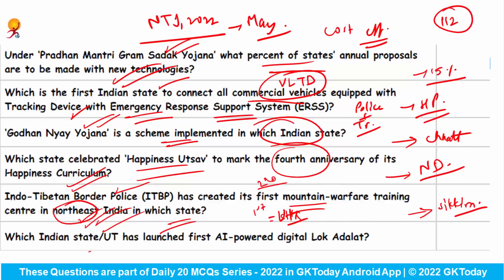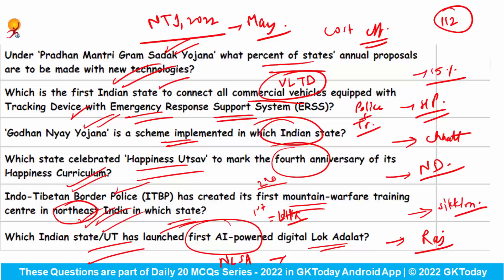Which Indian state or union territory has launched the first AI-powered digital person? It was launched in Rajasthan by our National Legal Services Authority Chairman, Mr. Uday Umesh Lalit.